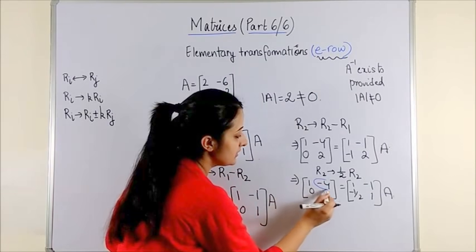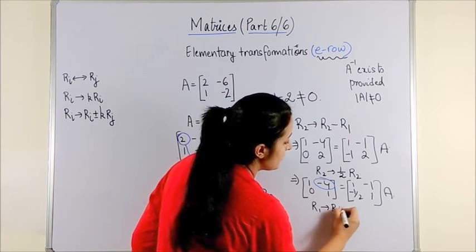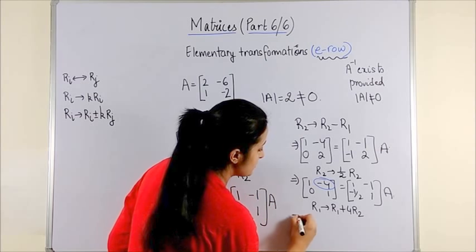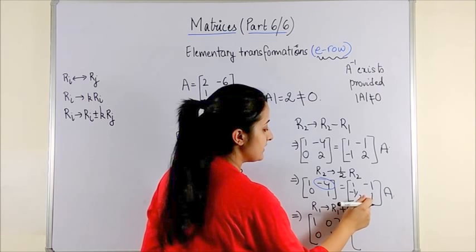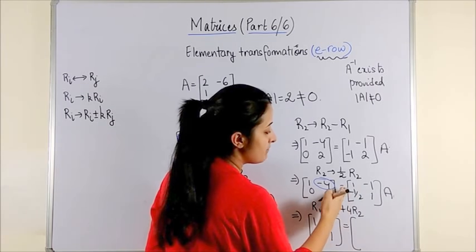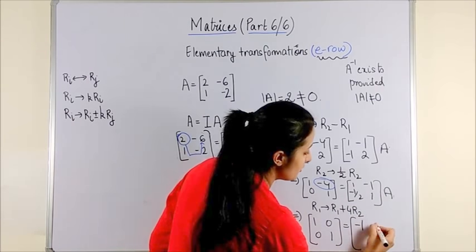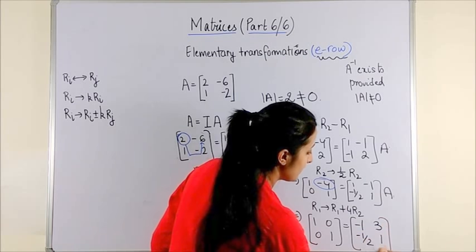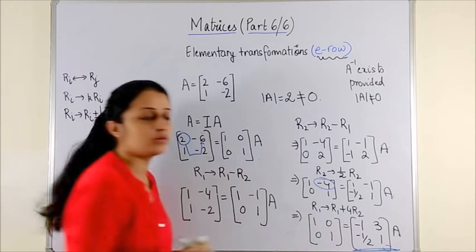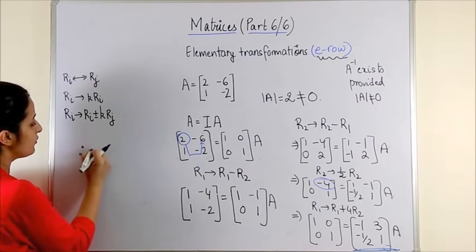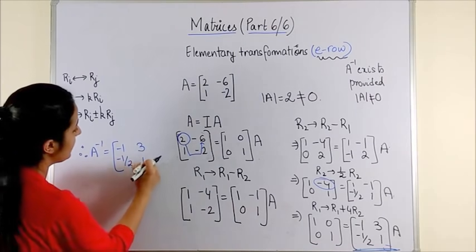We are only left with changing A12 to 0. Row 1 becomes row 1 plus 4 times row 2, which makes this 1, 0, 0, 1 — the identity. On the right side, it becomes 1 minus 4 over 2, which is minus 1; this becomes minus 1 plus 4, which is 3; then minus half and 1, with A as it is. Please do not leave the question here — conclude by stating: therefore, A inverse equals the matrix with entries minus 1, 3, minus half, and 1.